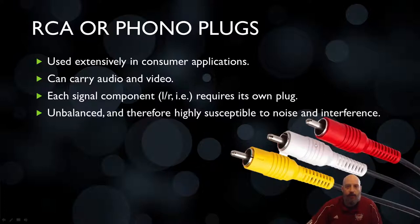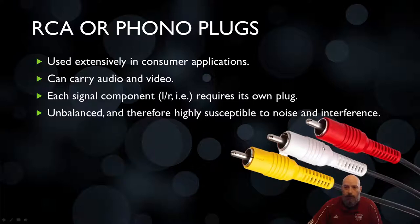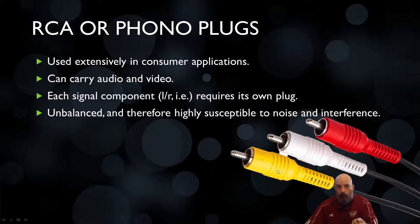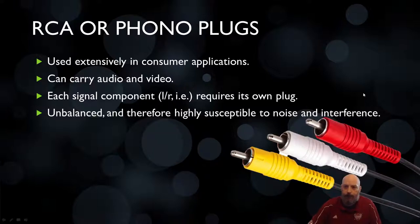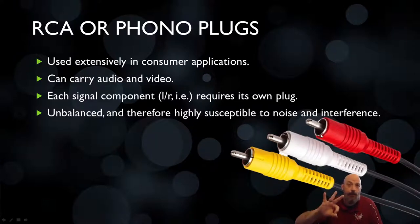One thing that made RCA plugs popular was easy color coding. With consumer electronics, red, yellow, and white became the standard: yellow indicated video, so you'd match yellow to yellow on your TV; red and white denoted left channel audio and right channel audio. To get all video and audio you needed at least three cables to pull off a decent signal.